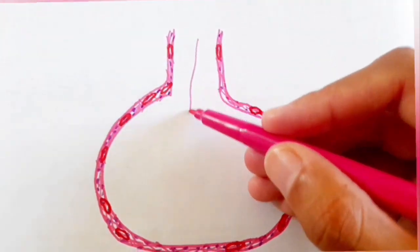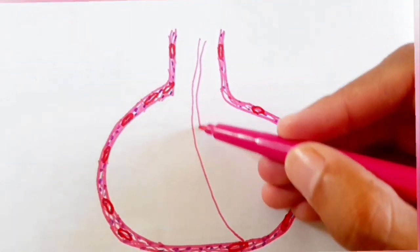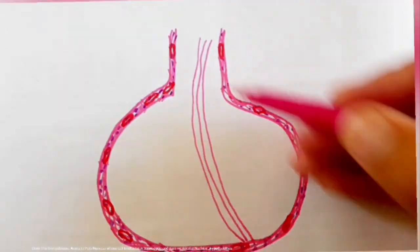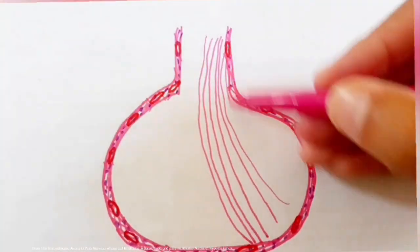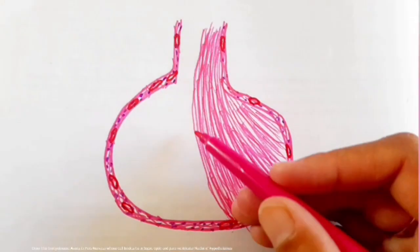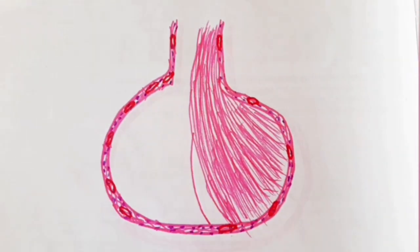Now draw a partition between anterior and posterior pituitary. Draw the unmyelinated axons in pars nervosa, whose cell bodies lie in supraoptic and paraventricular nuclei of hypothalamus.